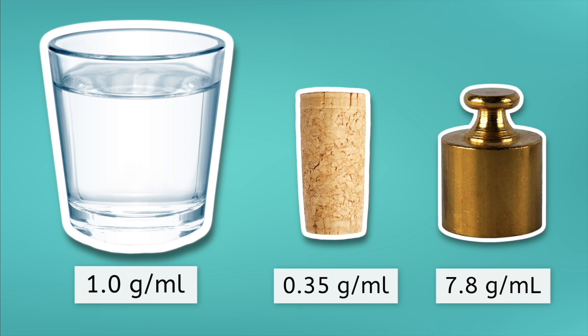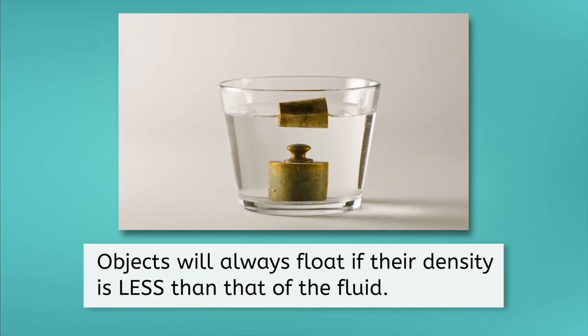The cork has a lower density than water, while the iron weight has a higher density than water. Use this information to make a prediction in your notes. The cork floats while the iron sinks. Remember that objects will always float if their density is less than that of the fluid they are placed in.